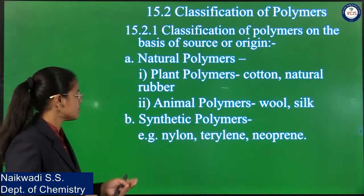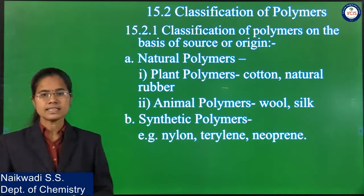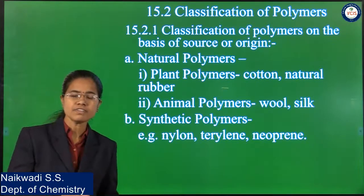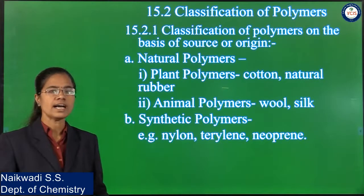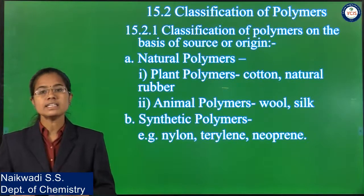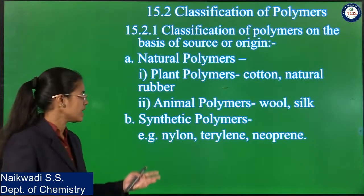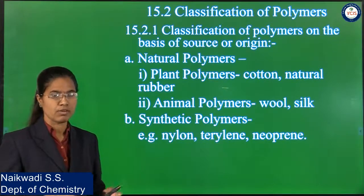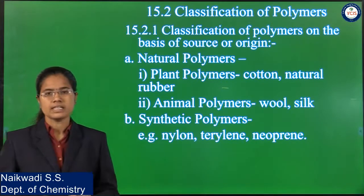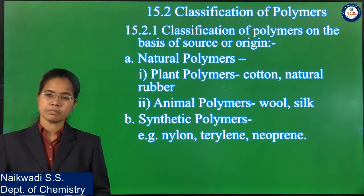The next type is synthetic polymers. Synthetic polymers are artificial polymers — they are generated in the laboratory or in industry, and are man-made polymers. We can prepare them in the laboratory. For example, nylon, terylene, and neoprene are examples of synthetic polymers.